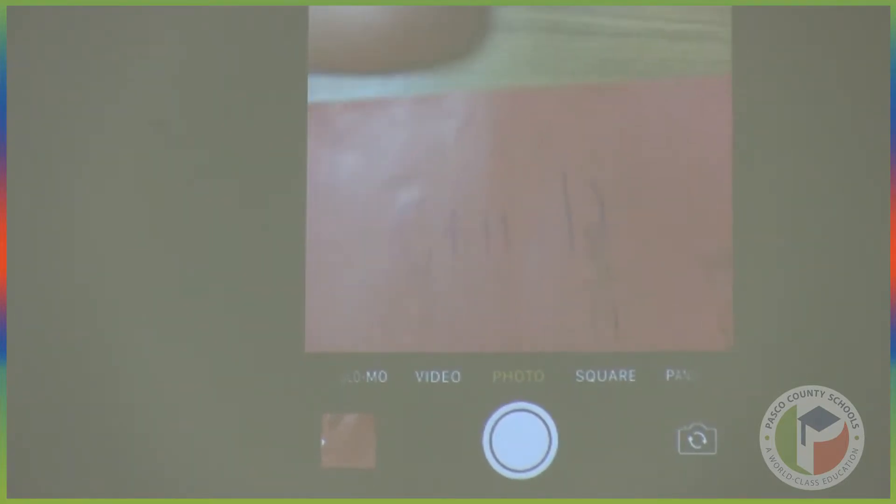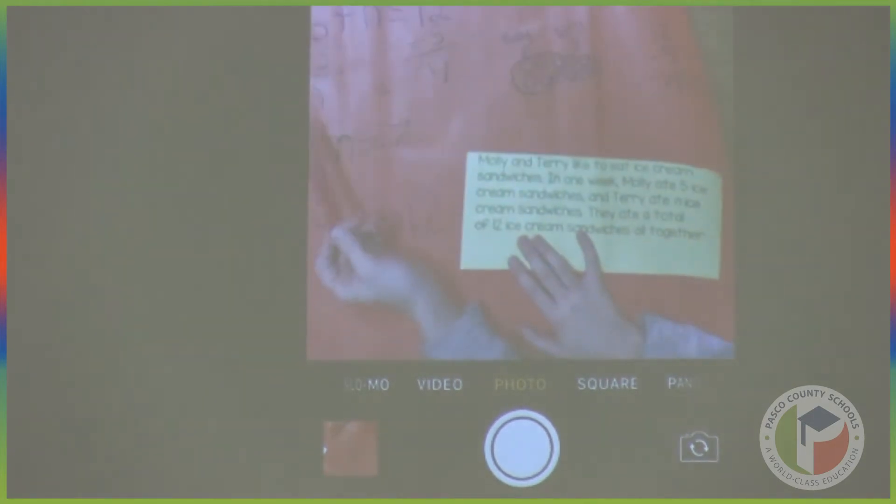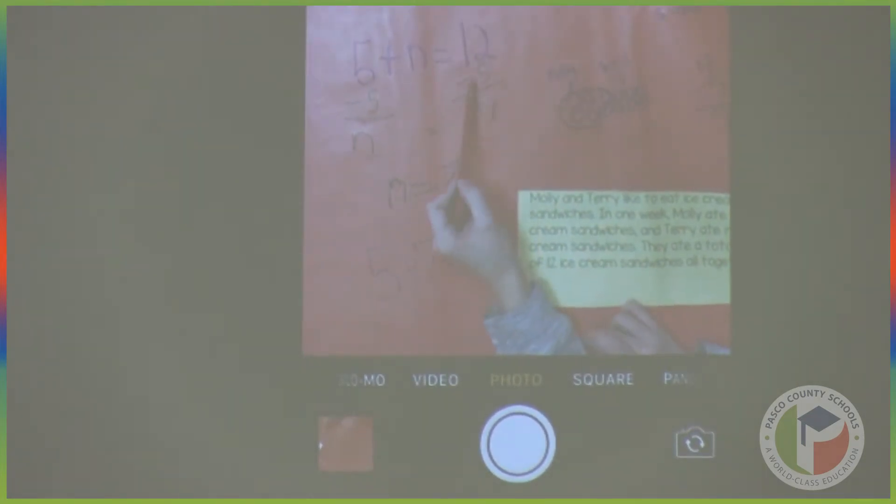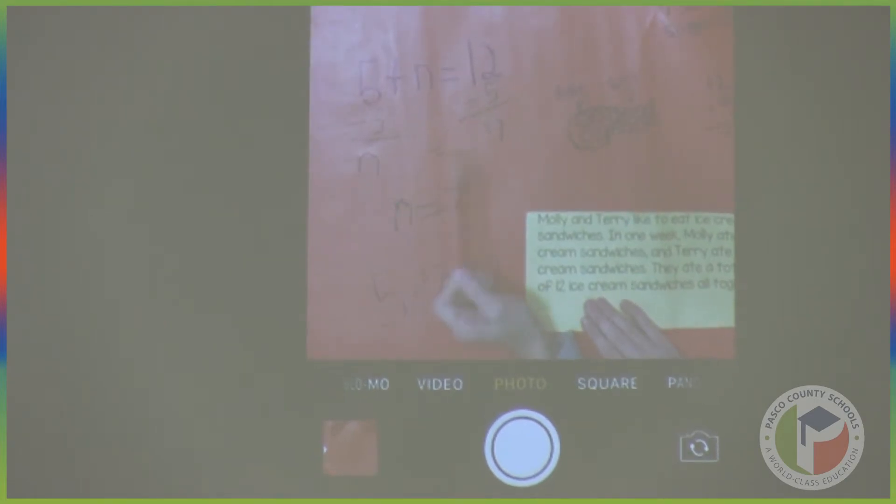So we wrote that down and did the inverse. We did 5 minus 5 because they would cancel each other out and it would be the variable. Then we did 12 minus 5 equals 7, so n equals 7. We also put that right there, and then we rewrote it as the regular problem.